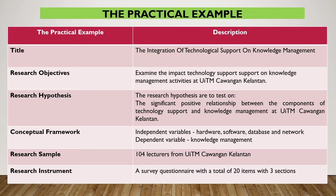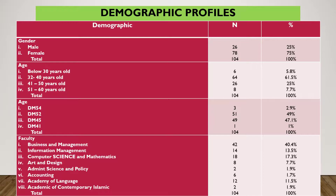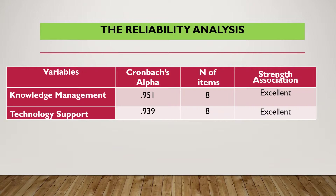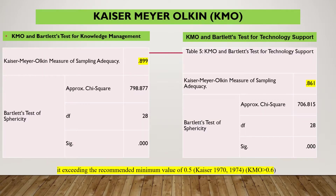For the practical analysis, data from this study is used, involving 104 respondents from UITM Cawangan Kelantan. Starting with reliability analysis: for knowledge management, the Cronbach's Alpha is 0.95 with 8 items, indicating an excellent strength of association based on Hair. For technological support, the Cronbach's Alpha is 0.939, also indicating excellent strength of association.